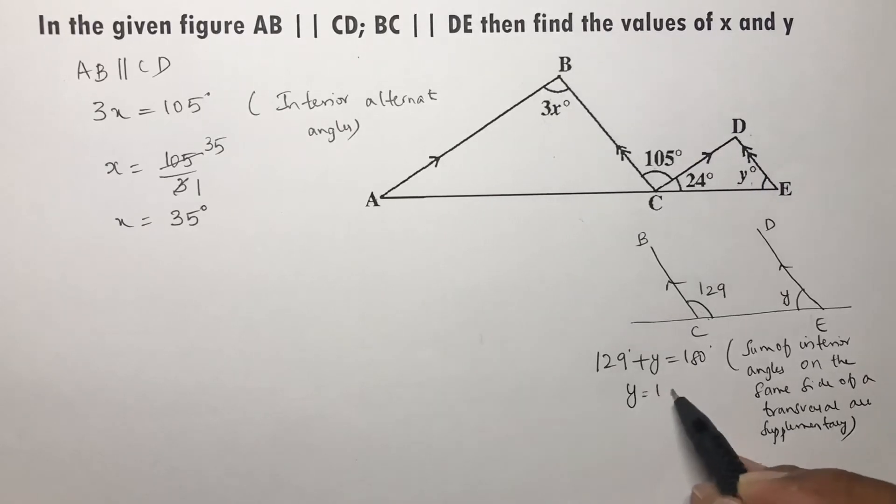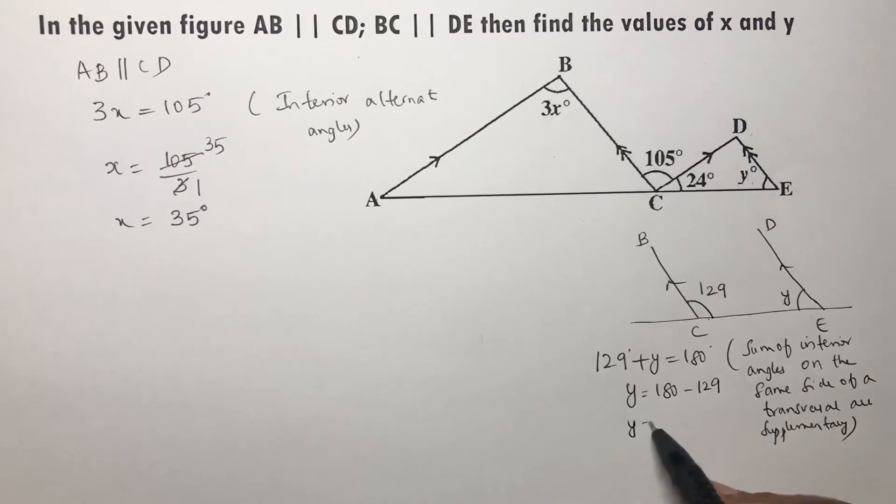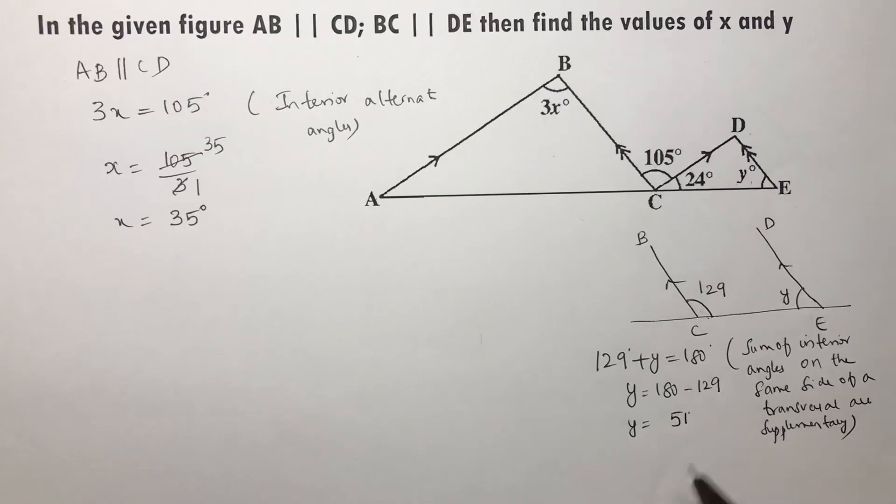From here, you'll get y equals 180 minus 129, so y equals 51 degrees.